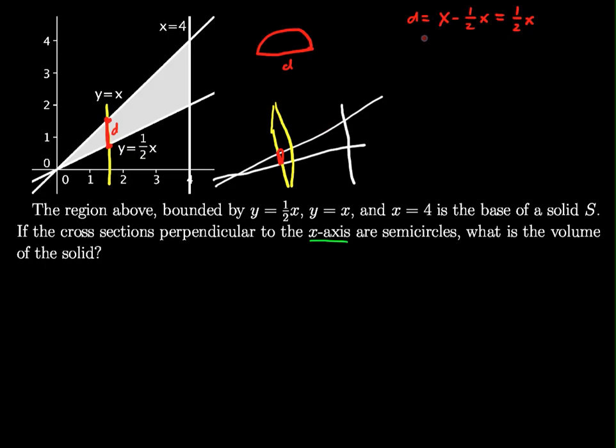But there's an issue. The area will be in terms of the radius, and the area of a circle is pi r squared. A semicircle, semi meaning half, is half of that. So I need to find the radius. If the diameter is a half x, the radius is half of a half x, which is one-fourth x.